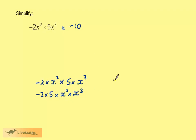Consider x squared times x cubed. This is x times x, then multiplied by x times x times x. 5 x's in a row like this would give us x to the power 5. So this is minus 10x to the power 5.